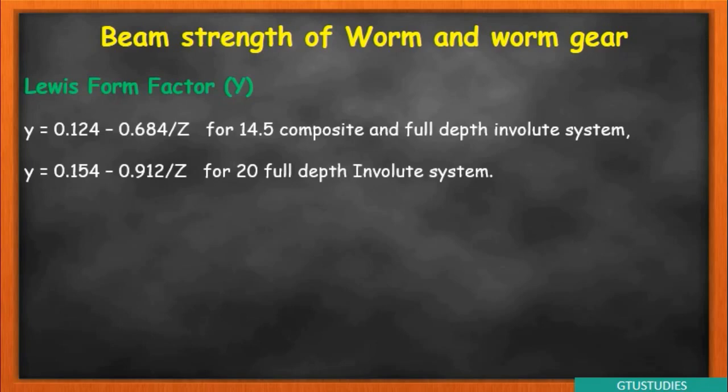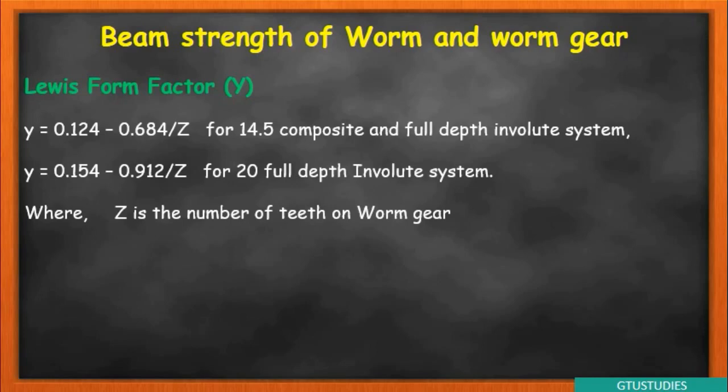In this equation, Z comes into use: Z is the number of teeth on worm gear. Two Z values appear — ZW (number of starts of worm) and ZG (number of teeth on worm gear). ZW is used as number of starts of worm; ZG gives number of teeth on worm gear. The small y (Lewis form factor) can be found from this equation using data from previous sessions.